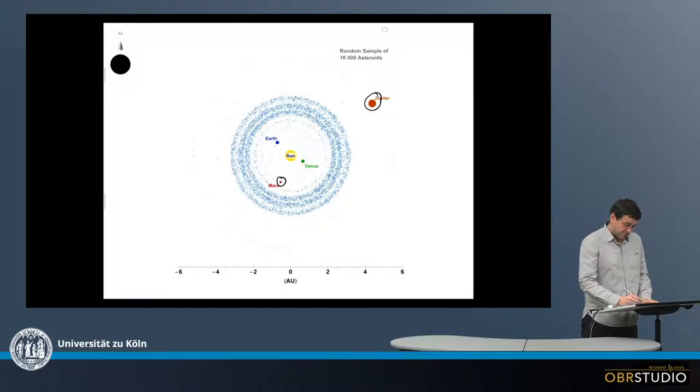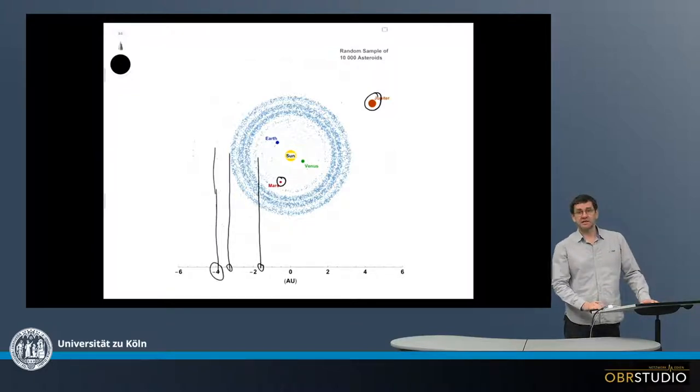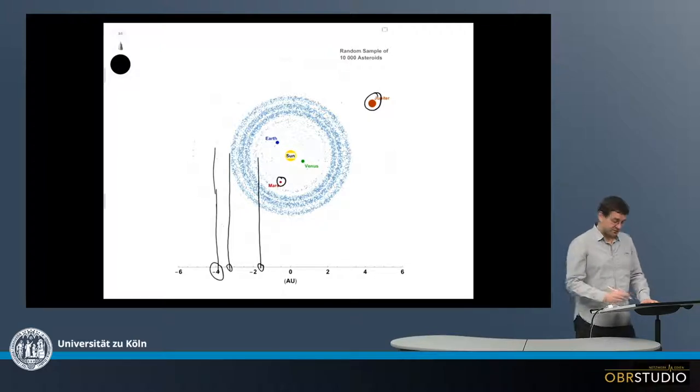The asteroid belt is from about 2 astronomical units up to maybe 3.5, but also up to maybe 4 astronomical units—different distances from the Sun. One astronomical unit is the distance Earth-Sun.